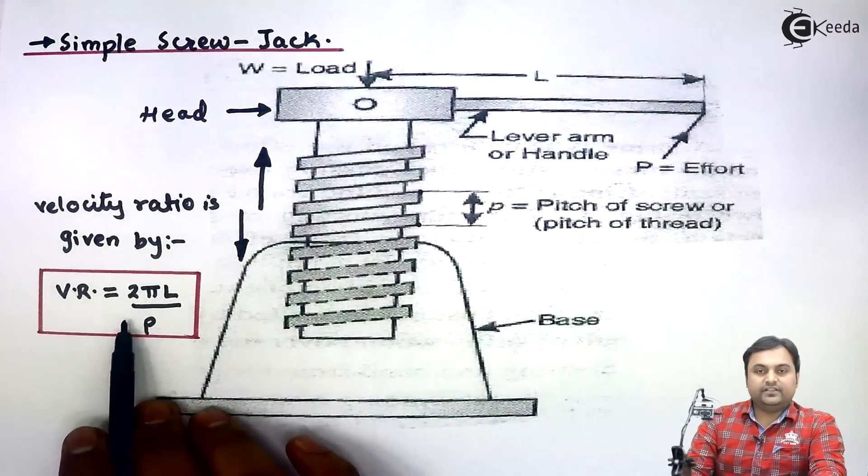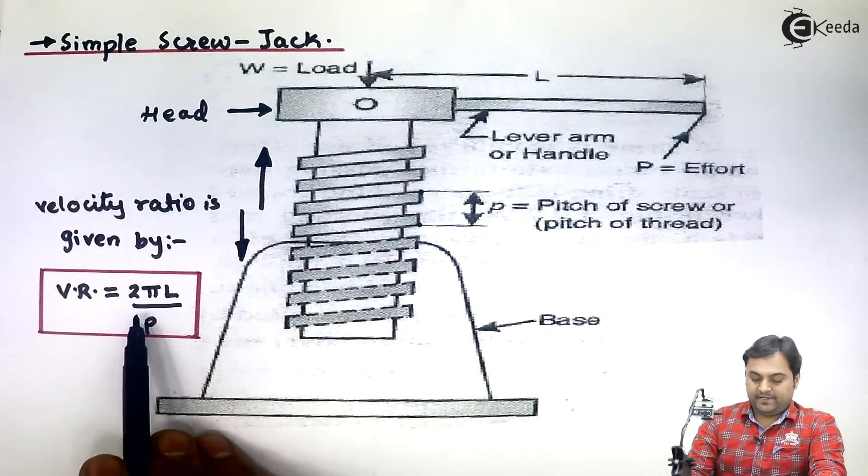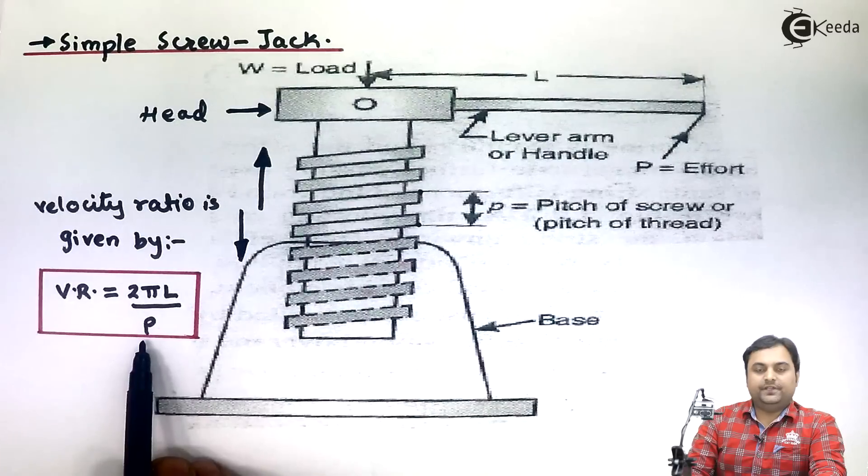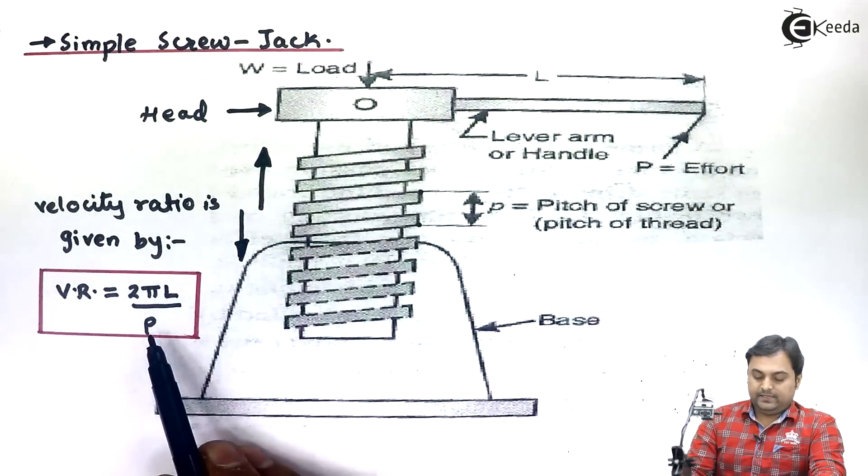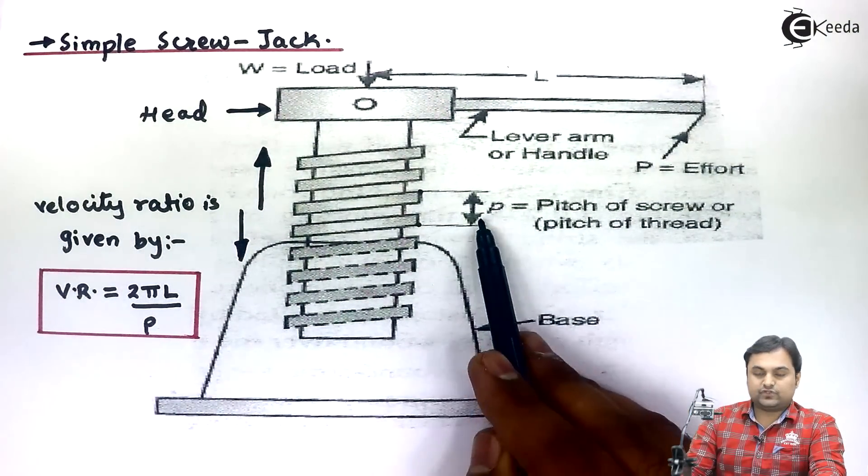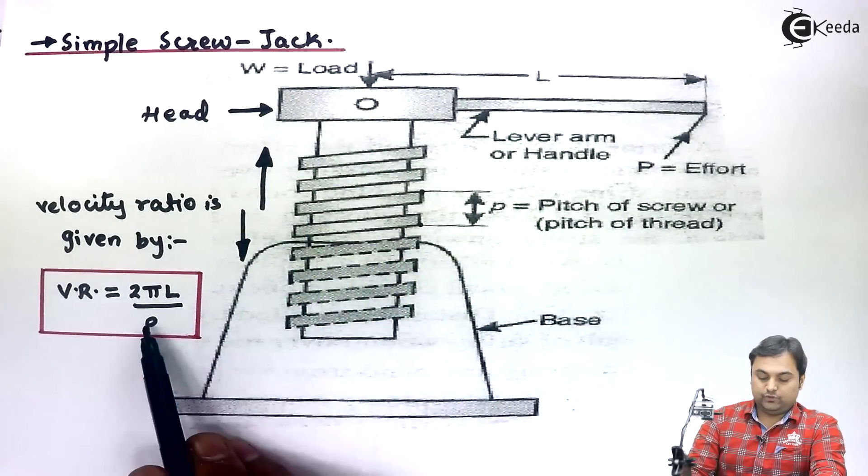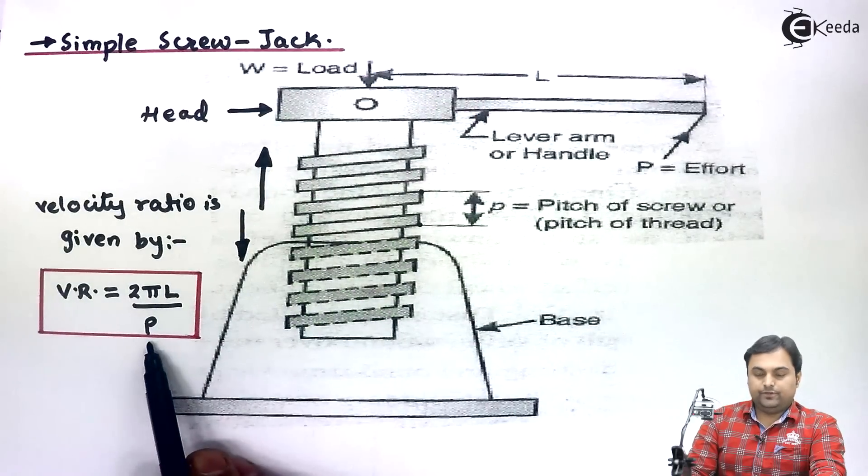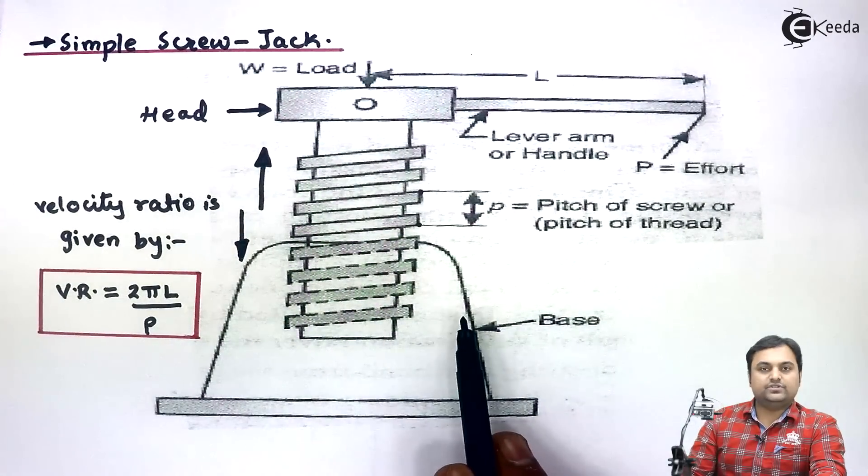Here I have written the velocity ratio formula. Velocity ratio of screw jack is given by VR = 2πL/P, where L is the length of handle of the screw jack and small p is the pitch of screw thread, not the effort. If we know the length of handle and the pitch of screw thread, we can easily calculate the velocity ratio for screw jack.